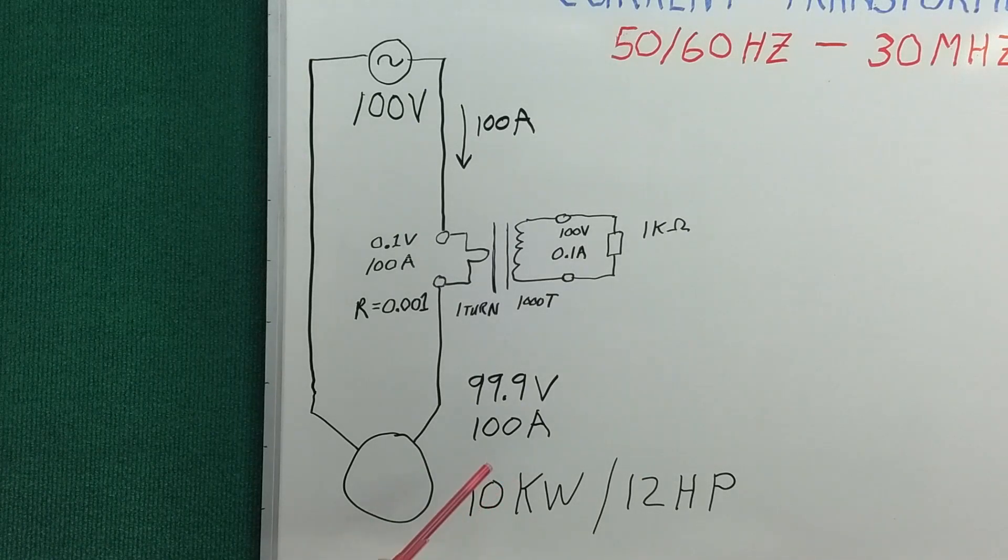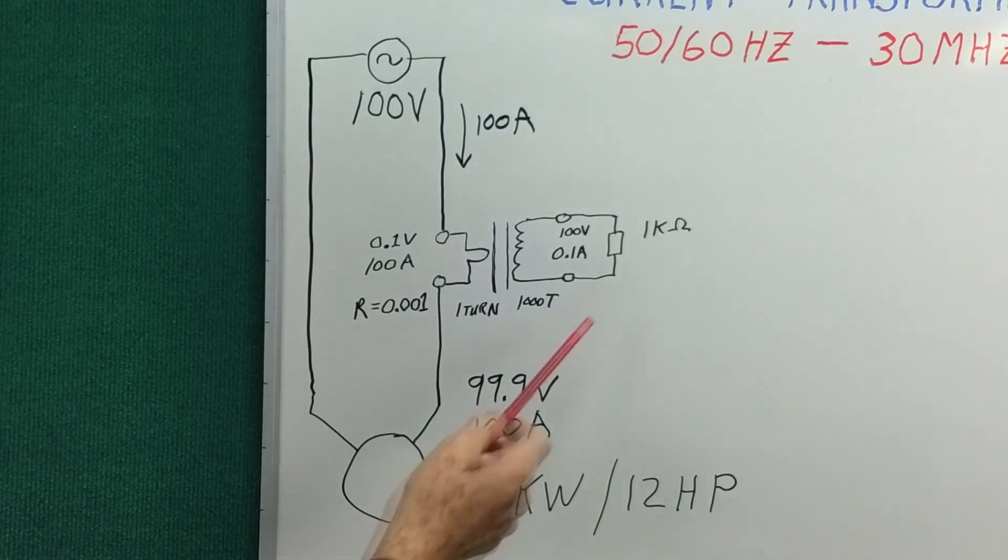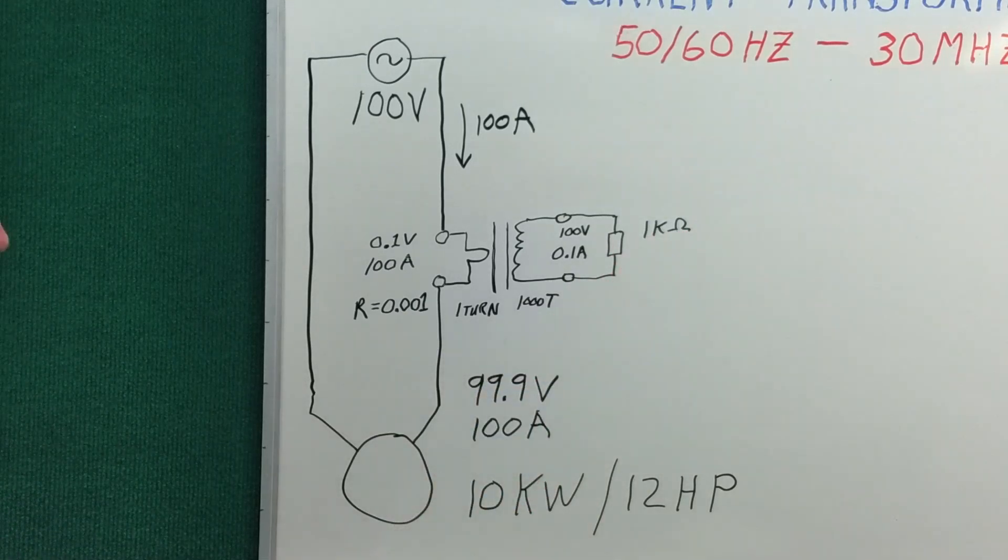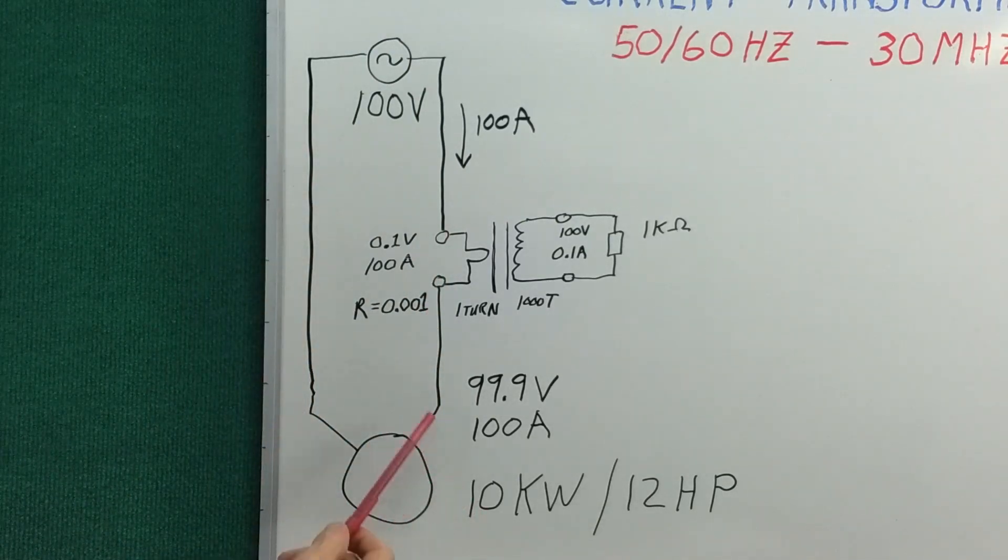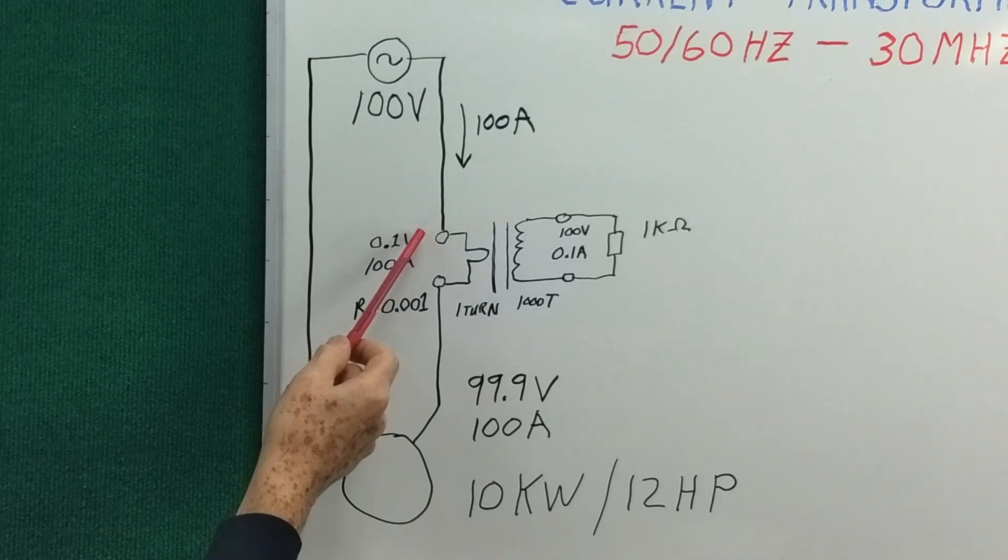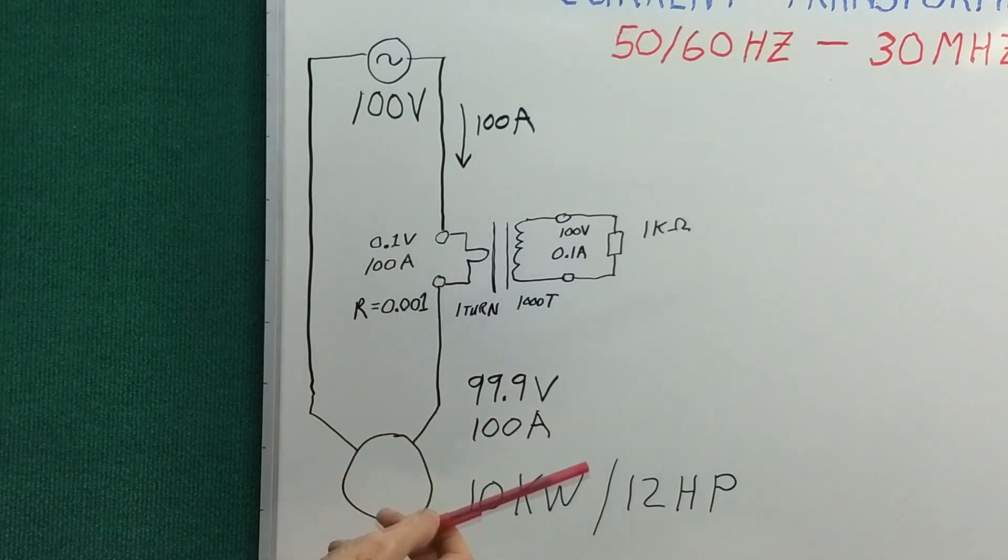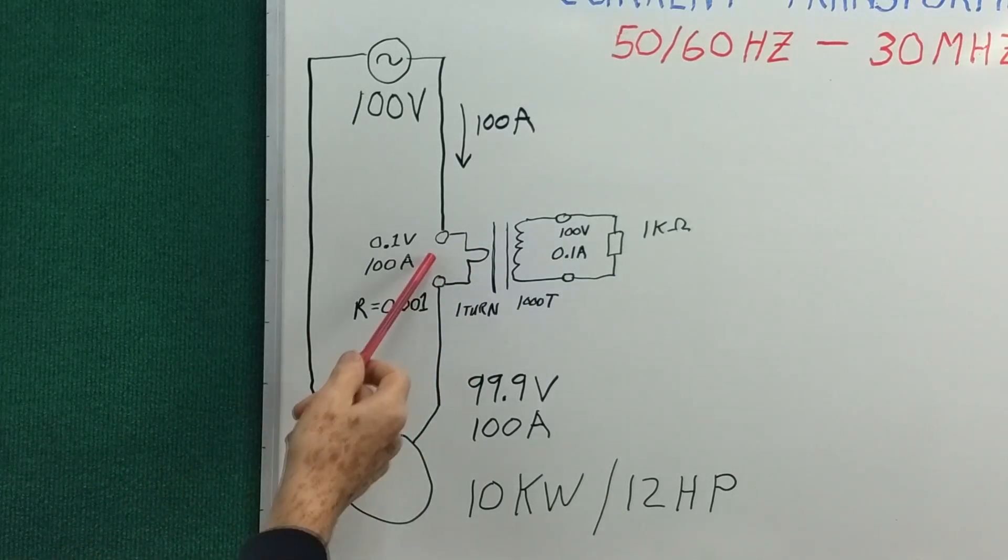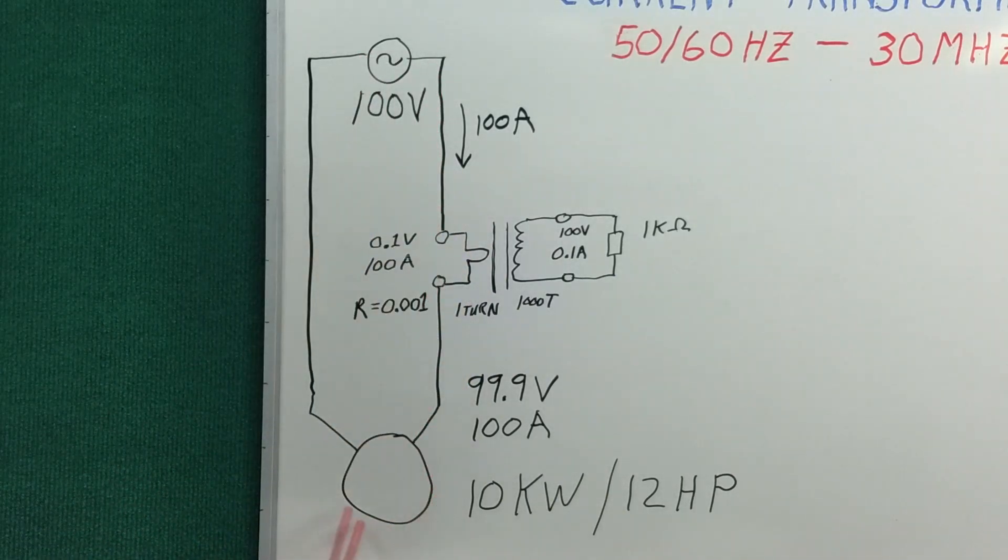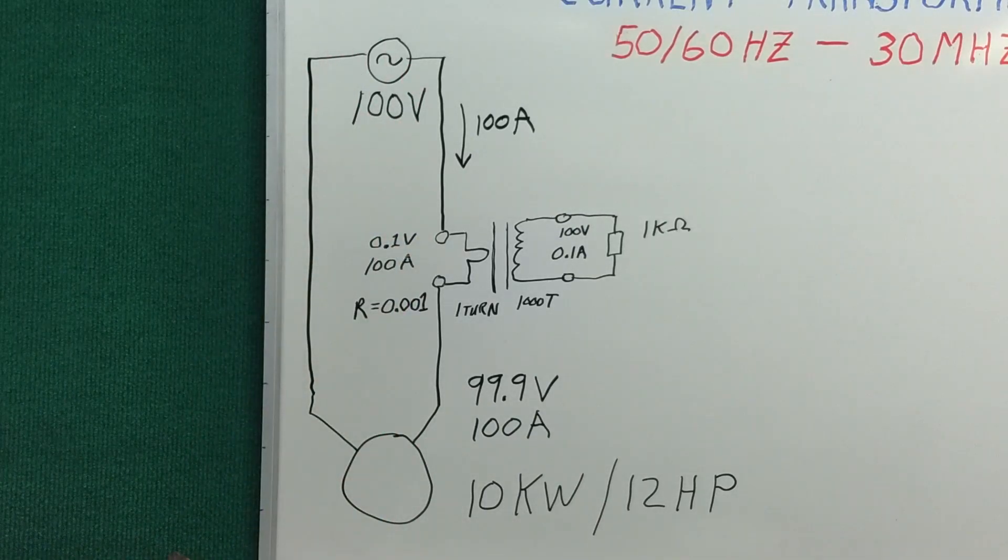Now what would happen if we short this secondary out? In other words, take the 1k ohms to 0 ohms? Well, our primary circuit could care less. We would go from 0.1 volts across that one turn winding to essentially 0 volts, depending on the resistance of the actual piece of wire. And to our primary circuit, that's like a tenth of a percent change in voltage. So it could care less. It keeps running along happily.